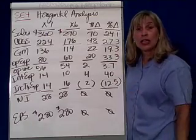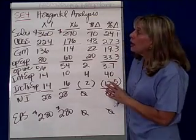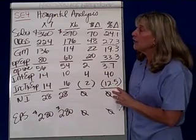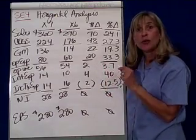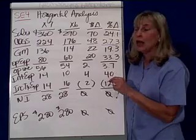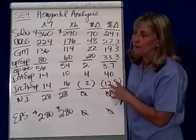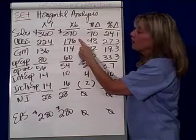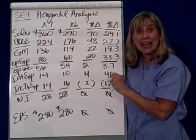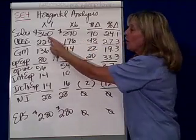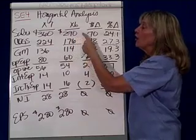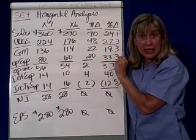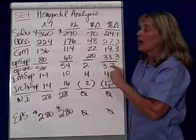Let's take a look at how we do this. I'm using short exercise four in the chapter. Sales are $360,000 — I left the zeros off — so that was in X7. In X6 it was $290,000. As far as the change in sales, the change was $70,000. Was that an increase? Yes, so it's not in brackets.